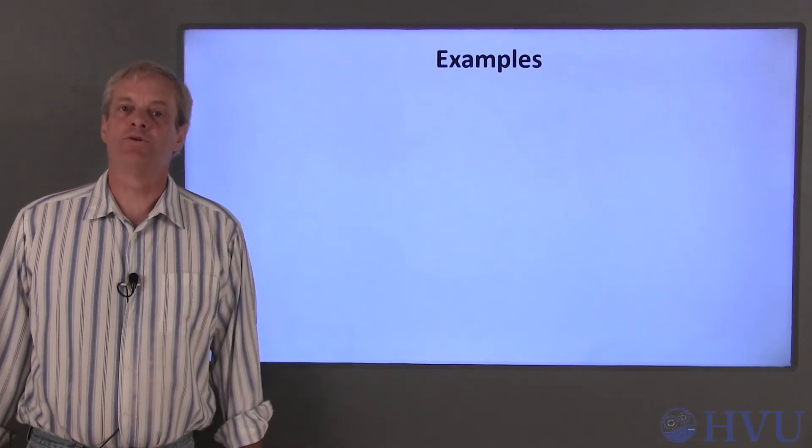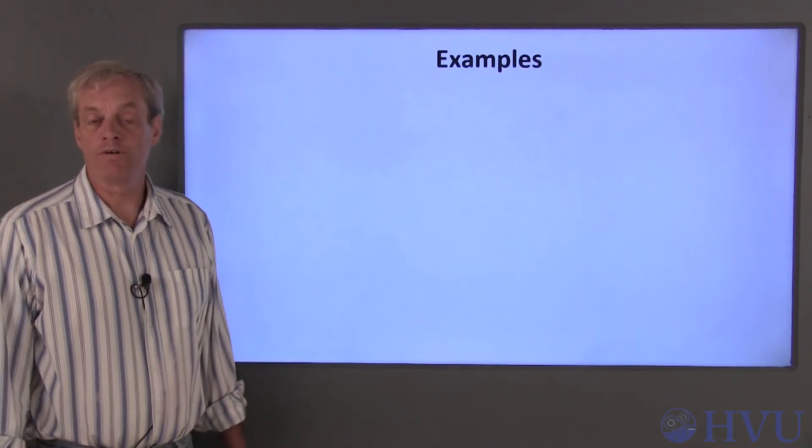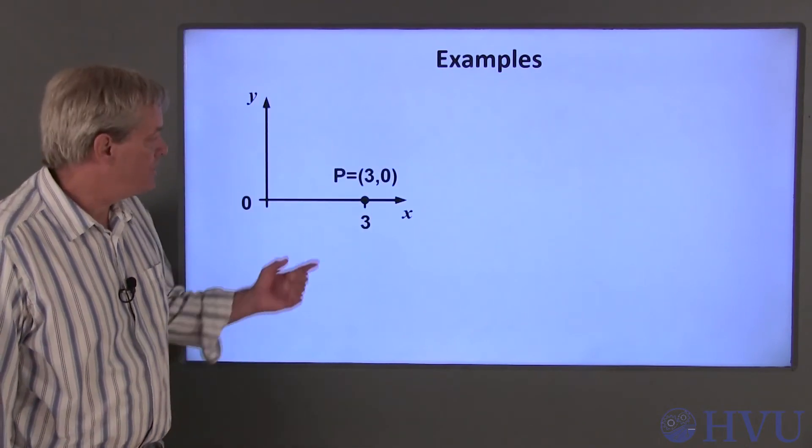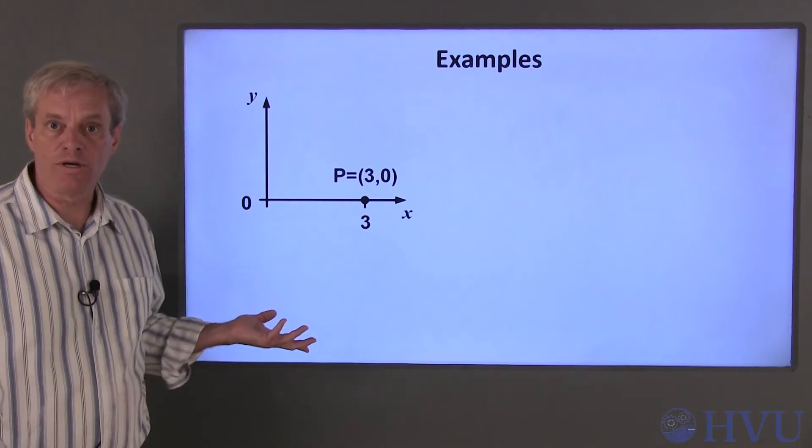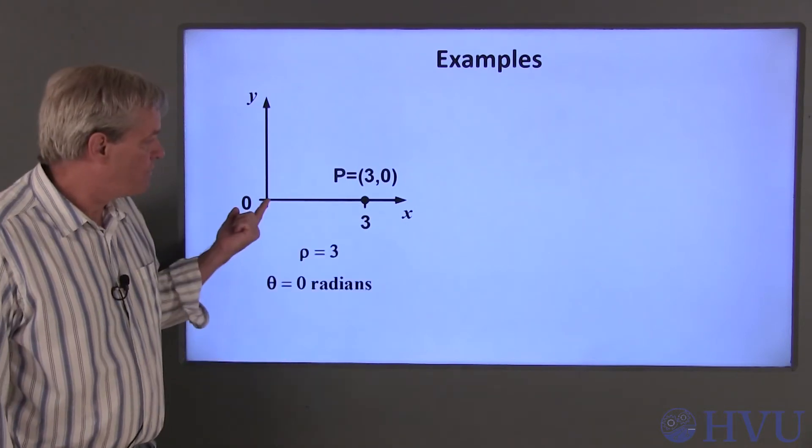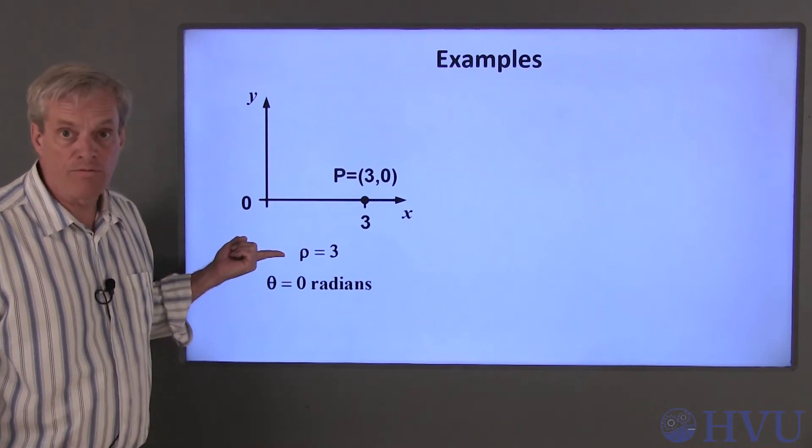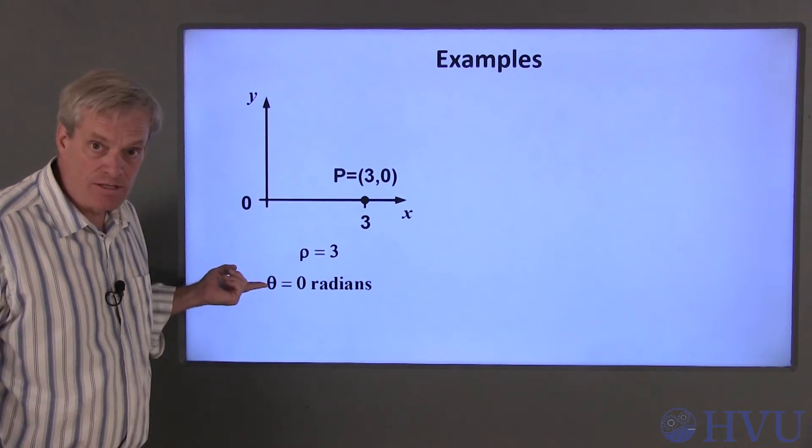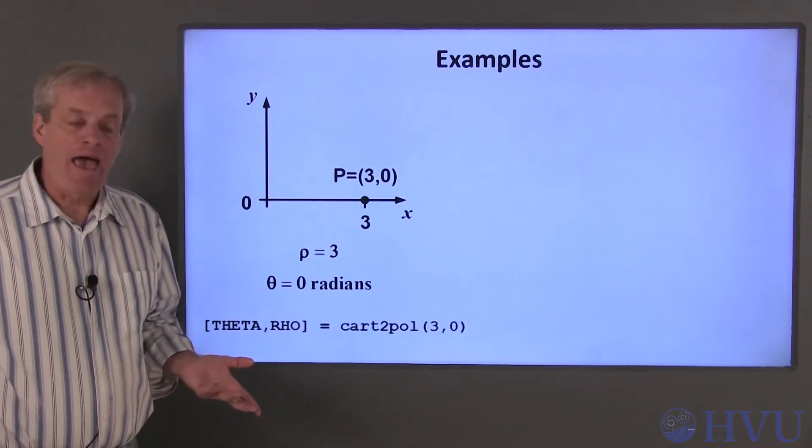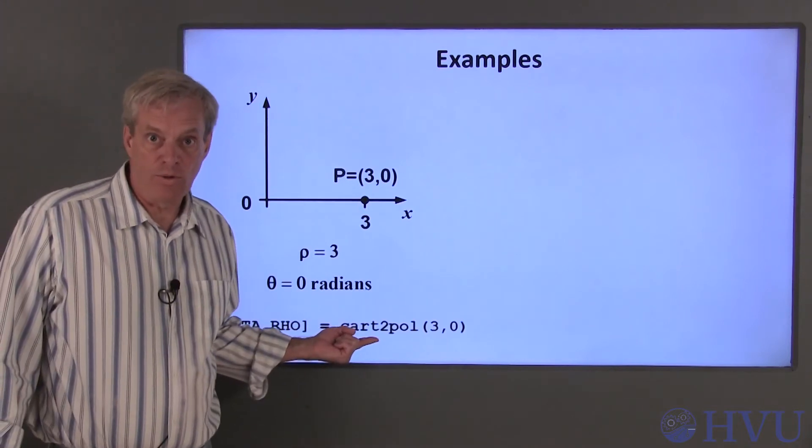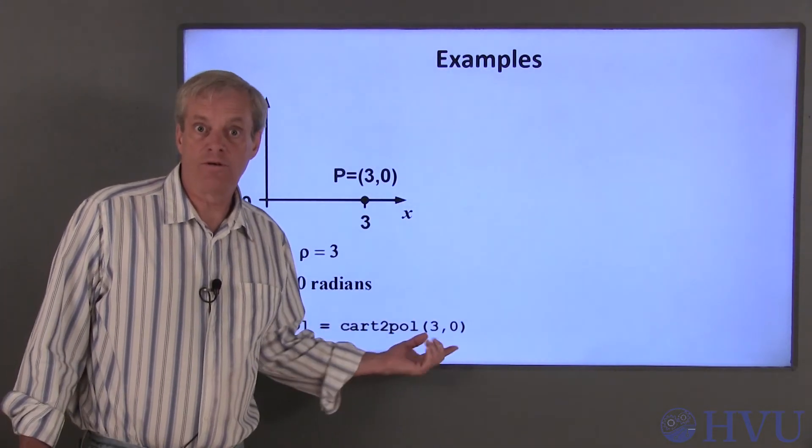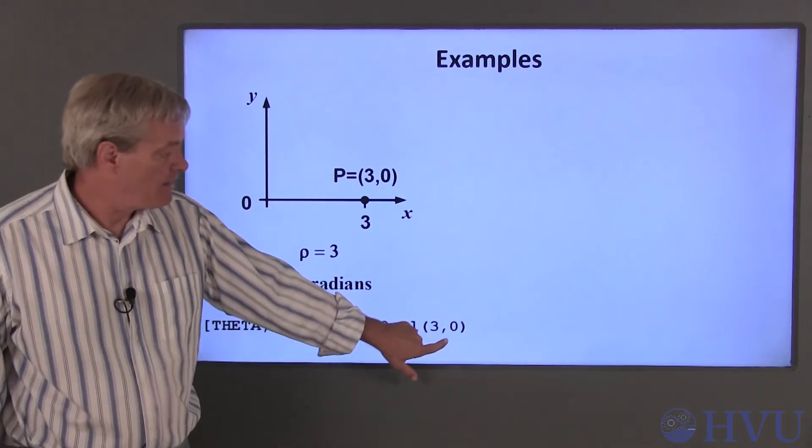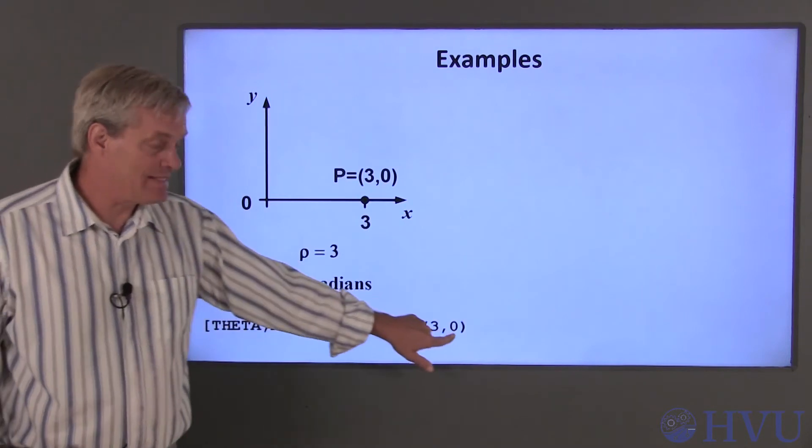Now let's do a couple of simple examples with the cart2pol function to illustrate the use of functions that have multiple arguments. In our first example, let's convert the cartesian coordinates (3,0) to polar coordinates. The point is three units from the origin, so we'd expect ρ to be three. Since the point is on the x-axis, we'd expect θ to be zero. We can use the Octave command [θ, ρ] = cart2pol(3, 0) to perform the conversion. Notice that the x coordinate 3 is the first in the list and the y-coordinate 0 is second in this list.